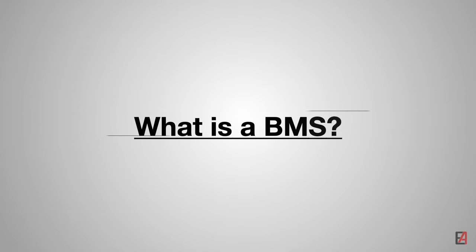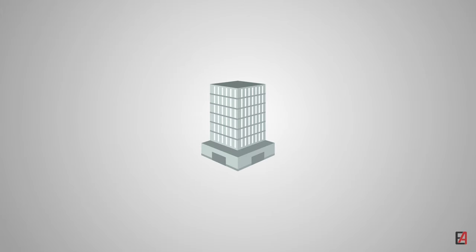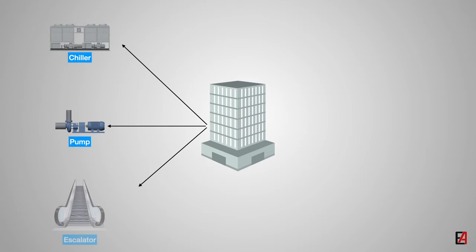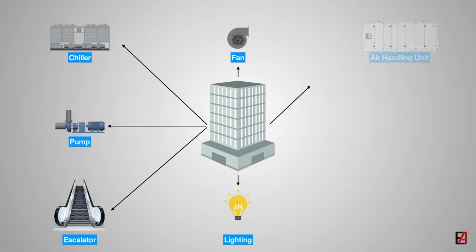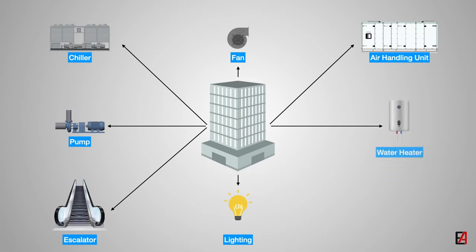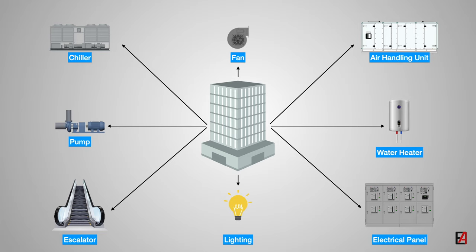What is a BMS system? Let's take a high-rise building as an example. This building will have many mechanical, electrical and plumbing equipment. Mechanical equipment such as chillers, chilled water pumps, water heaters, and ventilation systems such as air handling unit fans, etc.